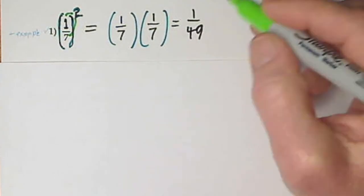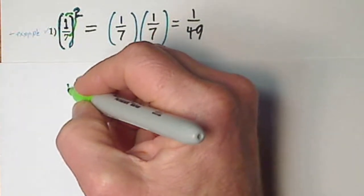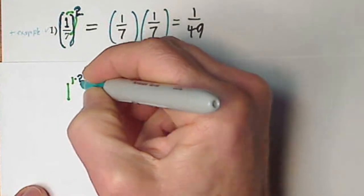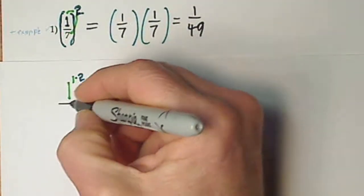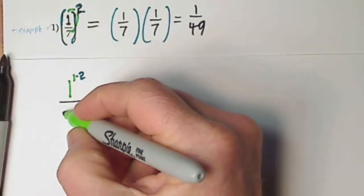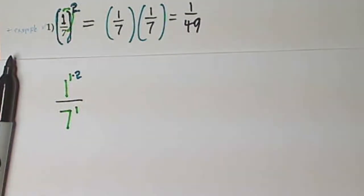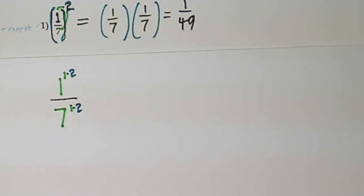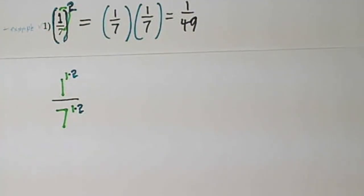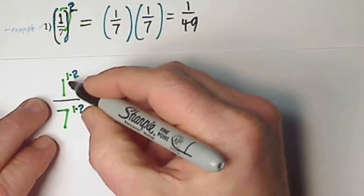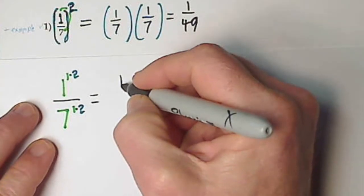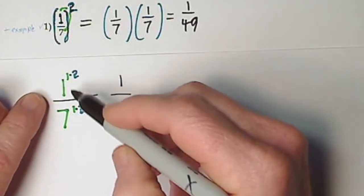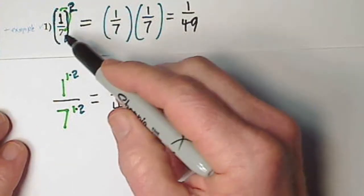So what I would really have is 1 to the 1st power times 2, sitting over 7 to the 1st power times 2. That was a rather long-winded way to say 1 to the 2nd power is simply 1, and 7 to the 2nd power is 49. So this is more the technical explanation, but usually you just do a lot of this in your head.